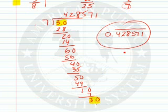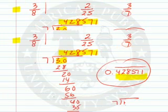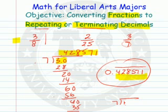You'll find some interesting things if you try 7 into 1 and 7 into 2 sometime — very interesting things happen with these digits. Hope it helps you in converting fractions into repeating, like this one, or terminating decimals. And as always, have a very happy day.